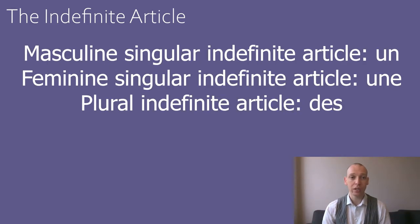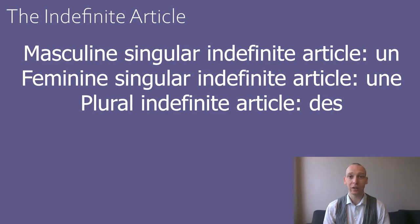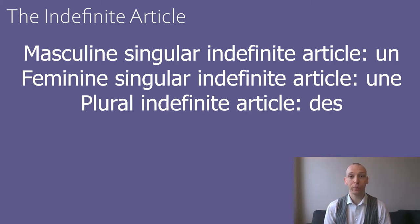In French, the indefinite article for singular items is the same word as the word for the number one. But as French nouns are masculine or feminine, there is a masculine form and a feminine form. The indefinite article for singular masculine items is 'un'. The indefinite article for feminine singular items is 'une'. For plural items in French, the indefinite article is 'des'.